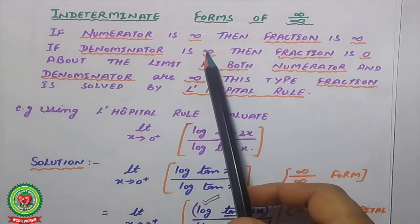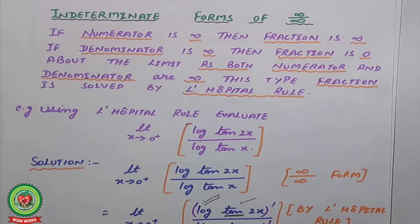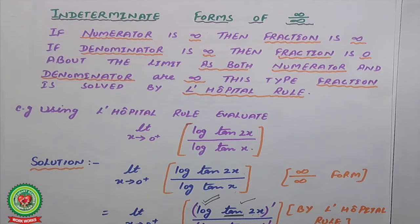If the numerator is infinity, the fraction is infinity — infinity divided by something is infinity. But if the denominator is infinity, the fraction is zero — anything divided by infinity equals zero. However, if both numerator and denominator are infinity, this type of fraction is called the indeterminate form, and it is solved by using L'Hôpital's rule.